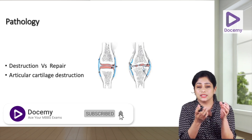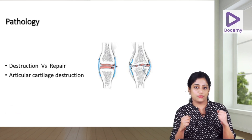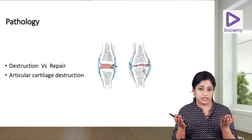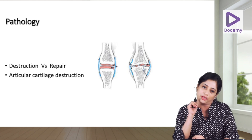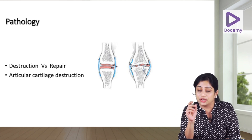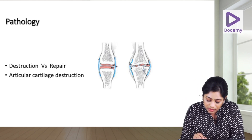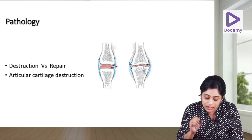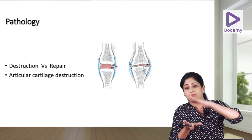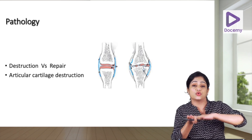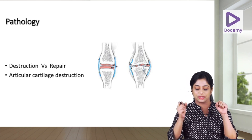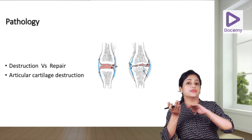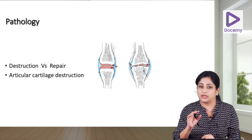The pathology of osteoarthritis involves a tug of war between the destructive process and the body's reparative mechanism, and whichever predominates determines the OA picture in that patient. Articular cartilage destruction is the primary event. The articular cartilage is destroyed more at regions of focal stress or more weight bearing, resulting in loss of joint space — this is joint space narrowing, which is asymmetric because the more weight-bearing area is more narrowed.